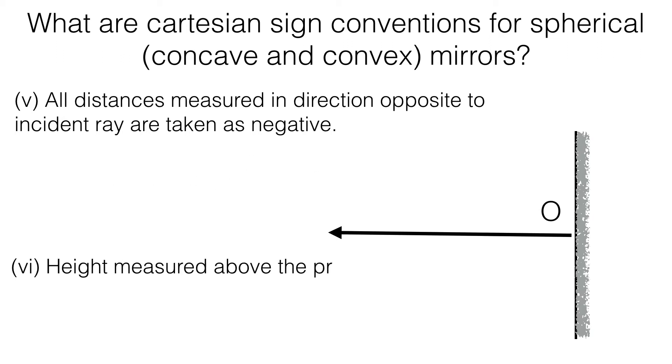Heights measured above the principal axis are taken as positive and below the principal axis are taken as negative.